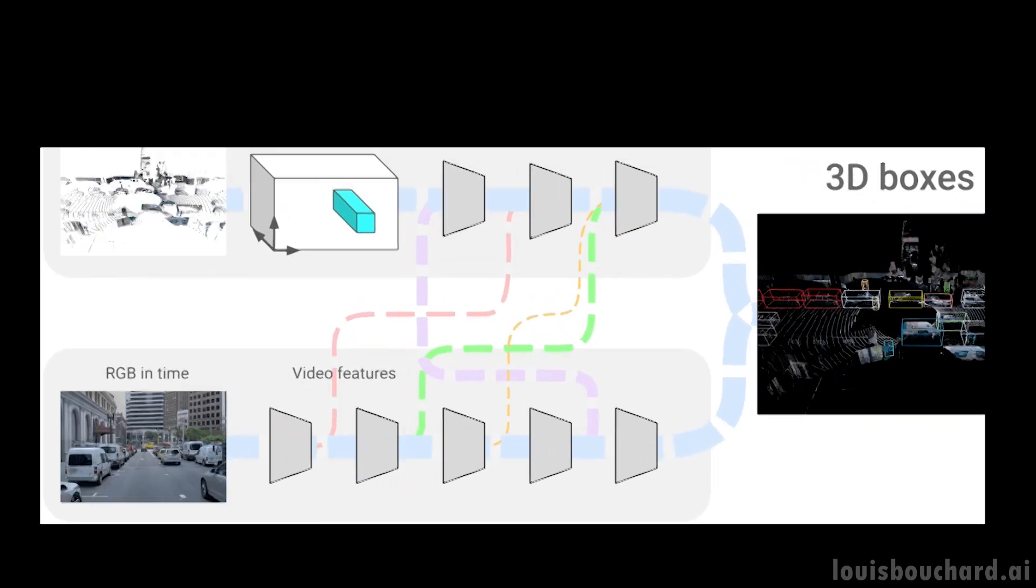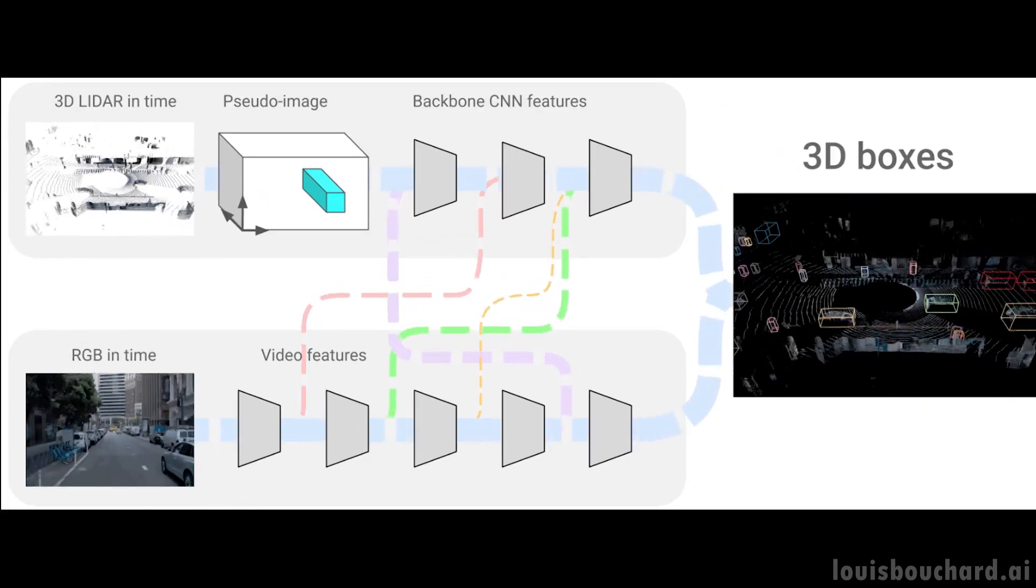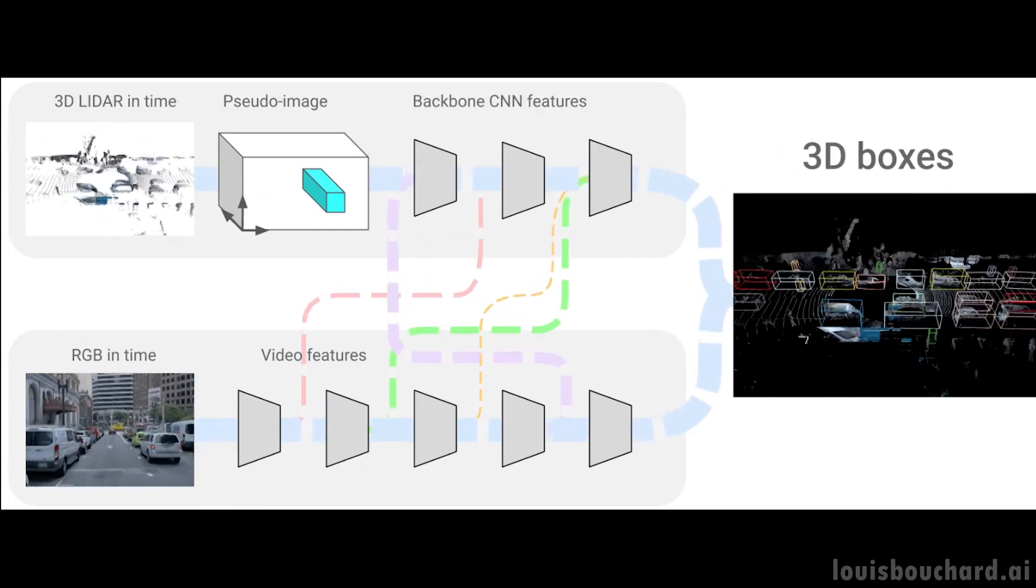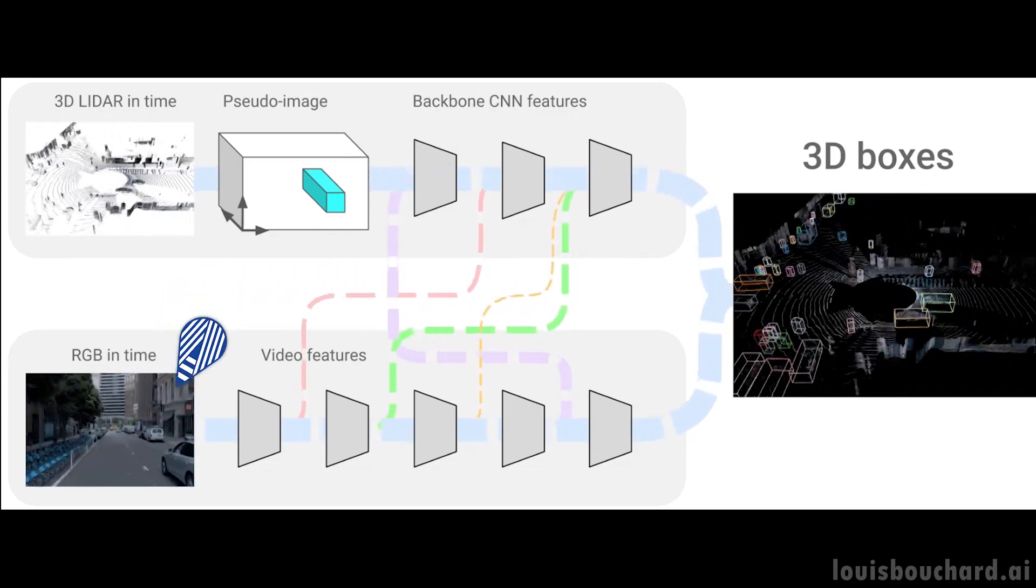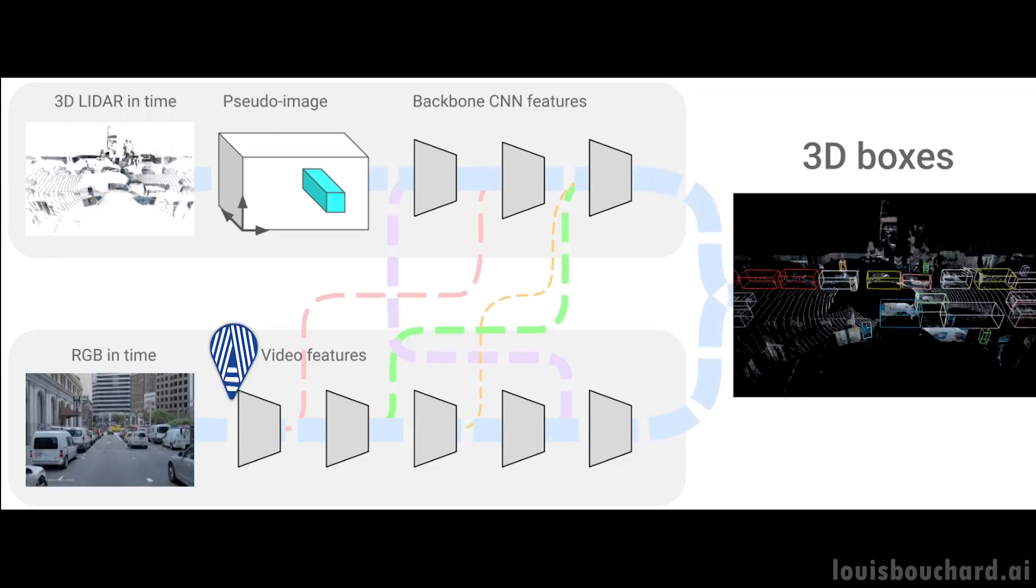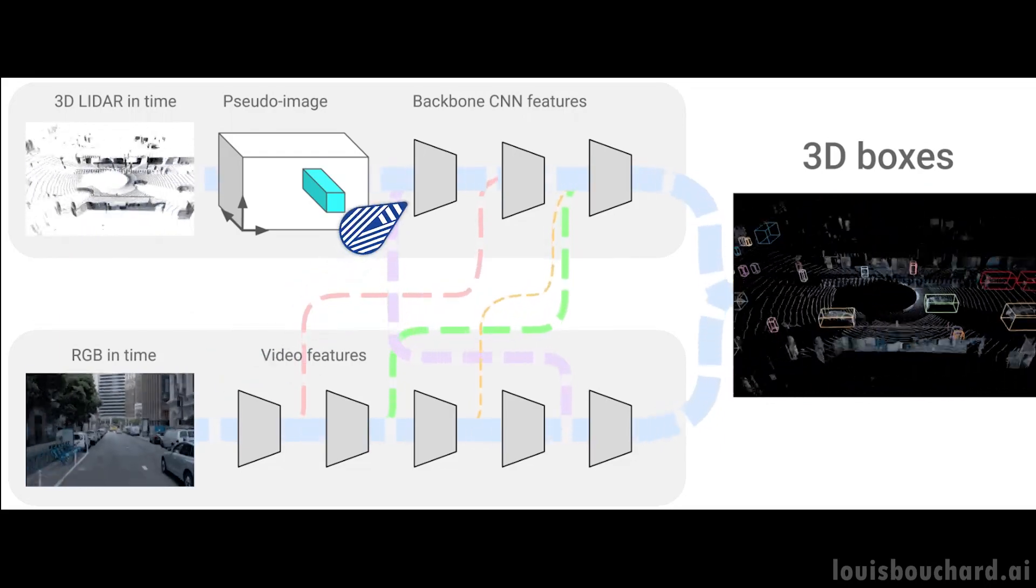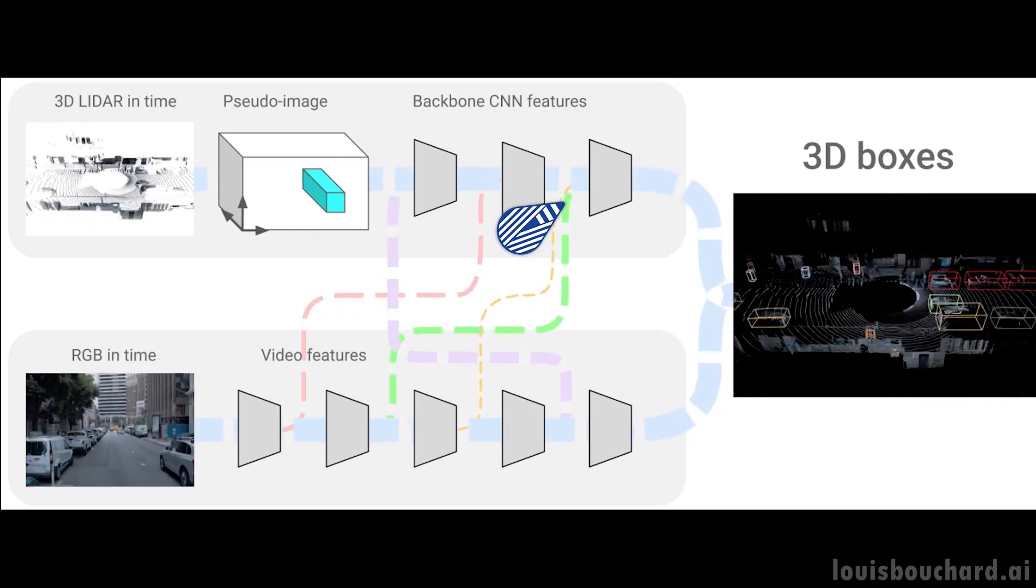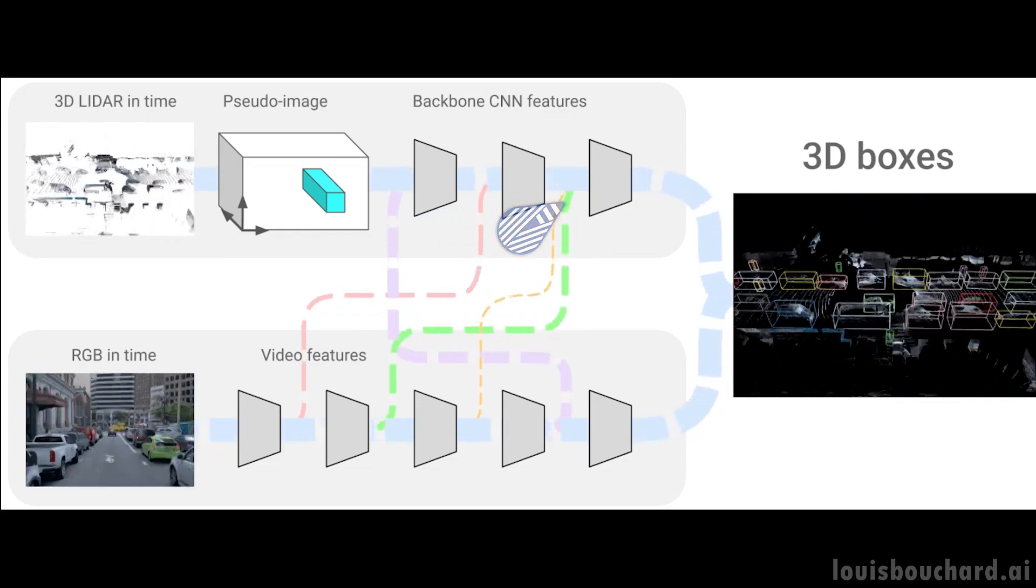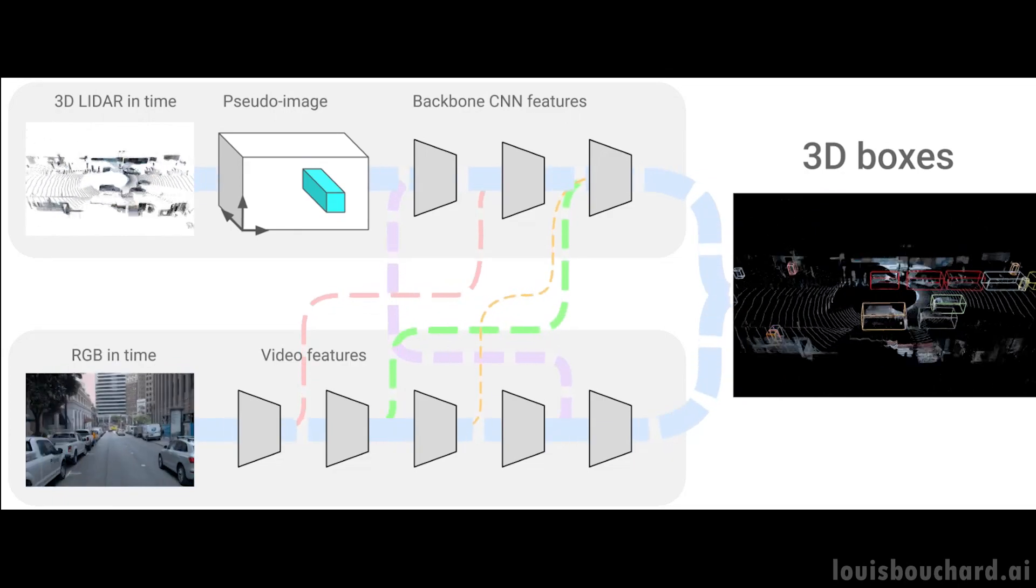The main challenge with this approach is combining these two very different kinds of information through these connections, the LiDAR 3D space data and more regular RGB frames. Using both information at all network steps, as described earlier, it's best to understand the whole scene better. But how can we merge two different streams of information and use the time dimension efficiently?